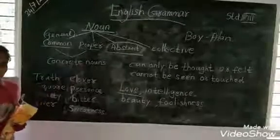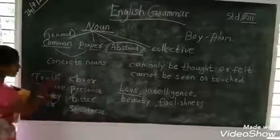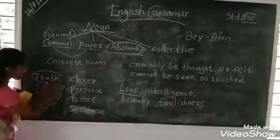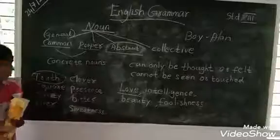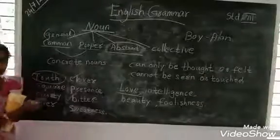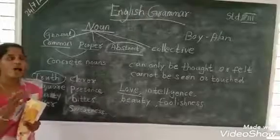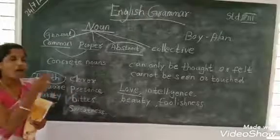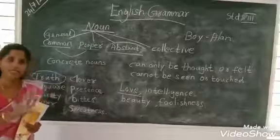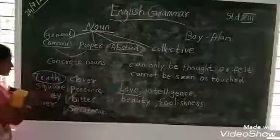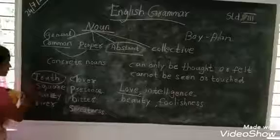Which one is an abstract noun? Square. Square means a shape — you can see it. So square is not an abstract noun.